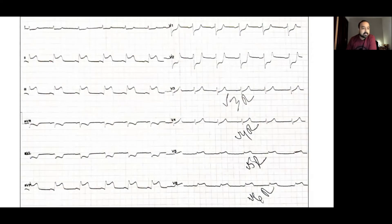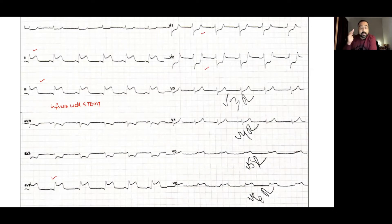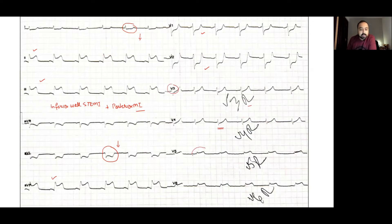In the next example, ST elevations are seen in the inferior leads: lead 2, lead 3, and lead AVF — indicating an inferior wall STEMI. In addition, there are ST depressions in leads V1 and V2, suggesting involvement of the posterior wall. There are also reciprocal ST depressions in leads 1 and AVL. Right-sided leads were obtained; while V4R shows no clear ST elevation, V5R and V6R show some ST elevations, suggesting possible right ventricular myocardial infarction.